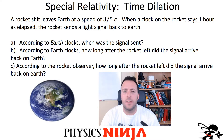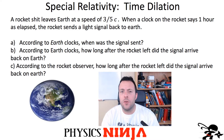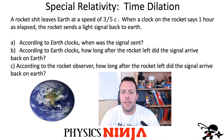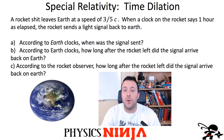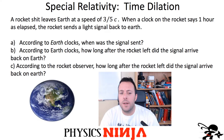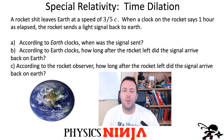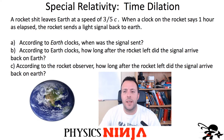There are three questions based on this problem. Question A: according to Earth's clock, when was the signal sent back to Earth? Question B: according to Earth's clock, how long after the rocket left did the signal arrive back to Earth? And the last one: according to a rocket observer — someone on the rocket — how long after the rocket left did the signal arrive back on Earth? It's a good problem on time dilation, so try it out for yourself and watch the rest of the video to get the solution.